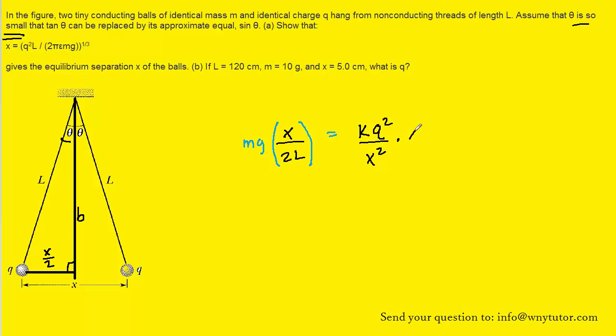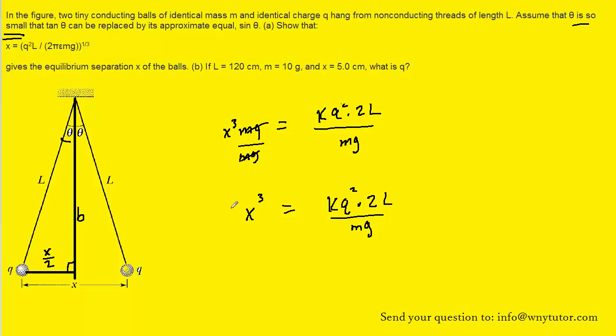Now, we'll try to solve this equation for x since that's what part A is asking us to do. We'll multiply both sides of the equation by x squared. The x squareds will cancel out. On the right, notice that on the left, x squared times x will make x cubed. So you're going to have x cubed mg all over 2L is equal to kq squared. Let's multiply both sides of the equation by 2L. So we'll have x cubed mg is equal to kq squared times 2L. We then divide both sides of the equation by mg. So they cancel out there. And then finally, we can take the cube root or, equivalently, we can raise both sides of the equation to the power of 1 third. And that's going to cancel out the cubing right here, leaving us with just x.